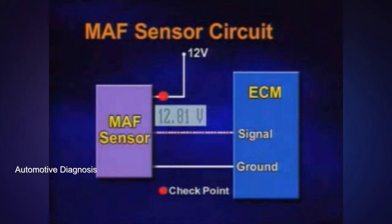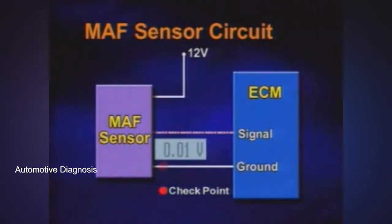There are 12 volt power, ground, and sensor signal terminals at the Mass Airflow Sensor.